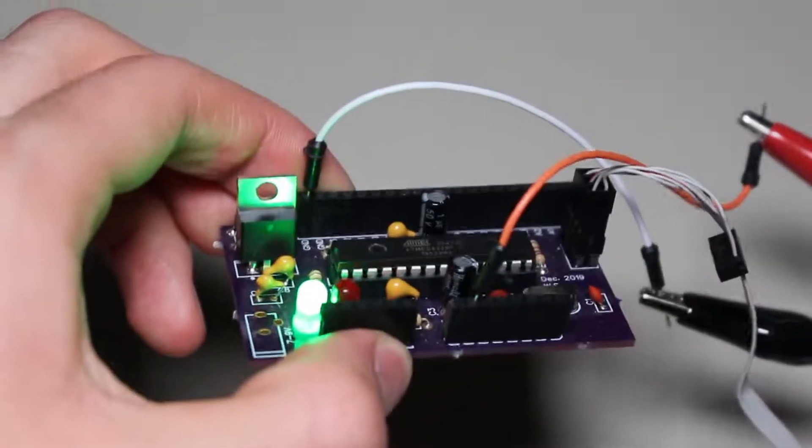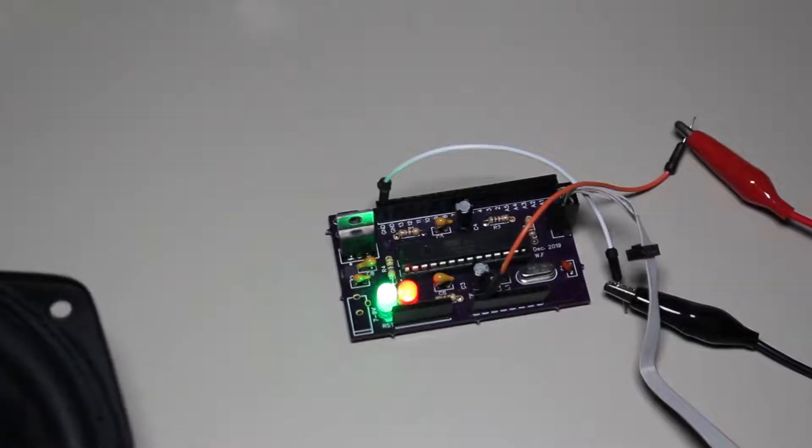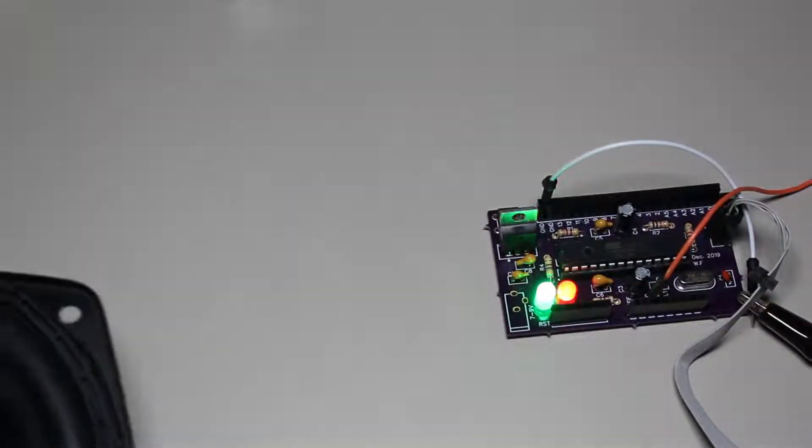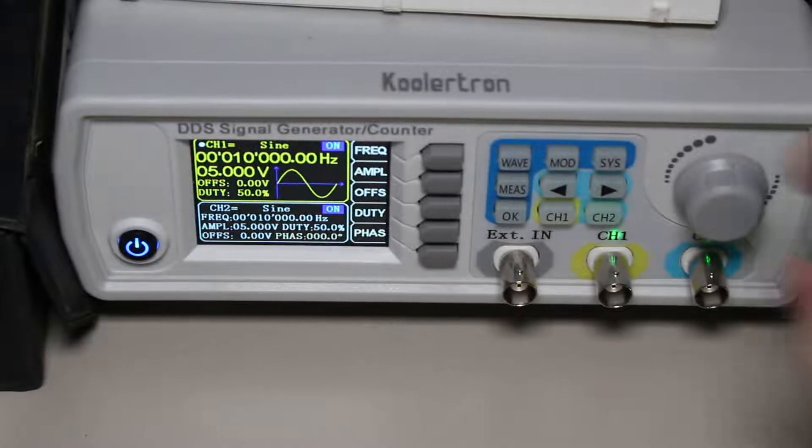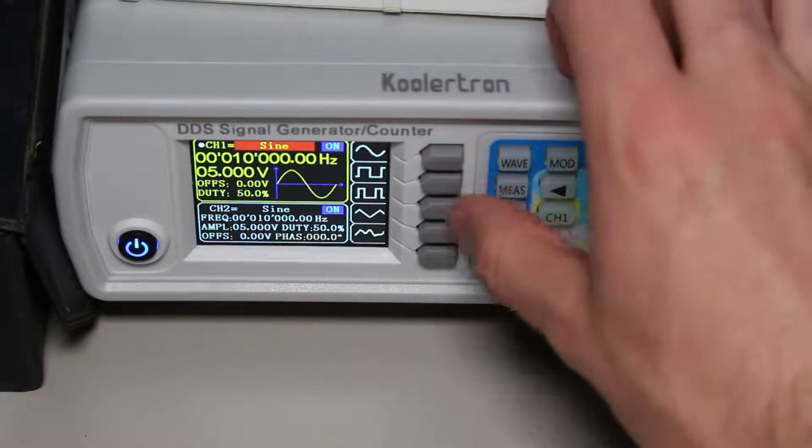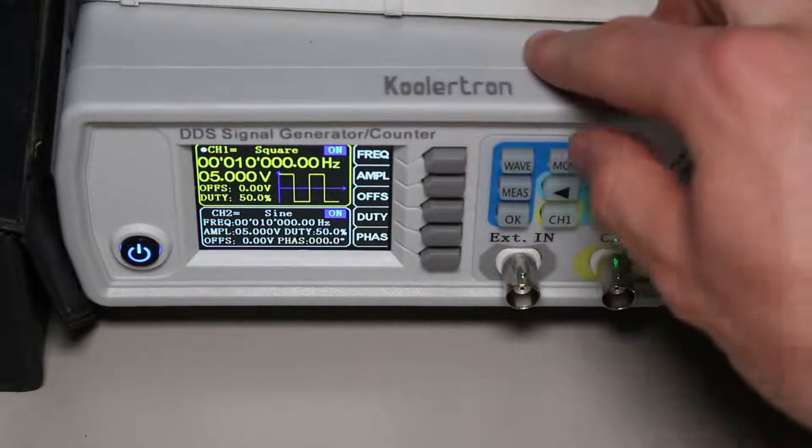But what about applications that require an analog output after some digital processing? For example, when we play music from our phones or computers, it comes out as an analog signal. My digital function generator creates analog signals as well. But how can we convert the two-state binary into the infinite possibilities of analog?